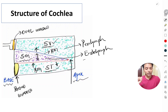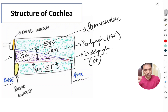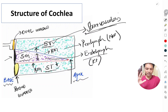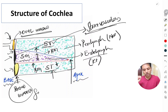The endolymph is rich in potassium, whereas the perilymph is rich in sodium. The scala media is bounded by the basilar membrane, Reissner's membrane, and a lateral boundary formed by a structure called the stria vascularis, which secretes the endolymph. At the base, the scala vestibuli has an oval window closed by the footplate of the stapes, and the scala tympani has a round window closed by the secondary tympanic membrane.